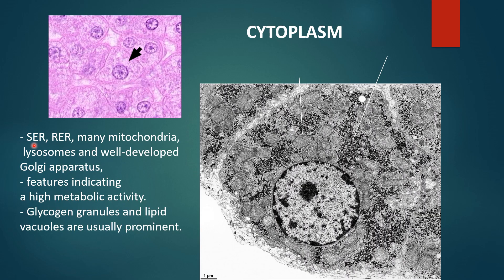In a transmission electron micrograph of the hepatocyte, the centrally placed nucleus with prominent nucleolus is visible, along with large numbers of mitochondria and glycogen granules. Nearly 800 to 2000 mitochondria are present in hepatocyte cytoplasm, along with 200 to 300 peroxisomes and large numbers of lysosomes. The hepatocyte has well-developed Golgi apparatus and smooth endoplasmic reticulum for detoxification of toxic materials absorbed from the GIT, demonstrating high metabolic activity.